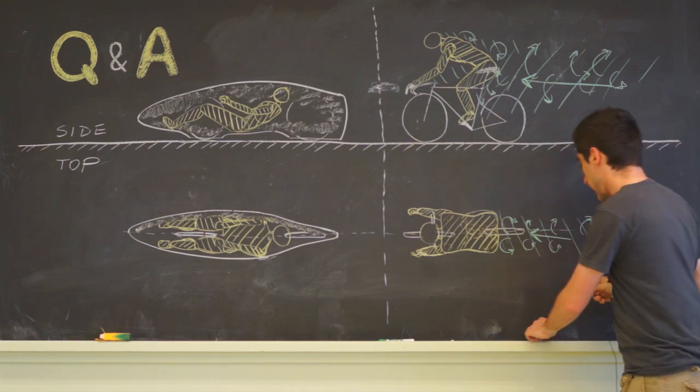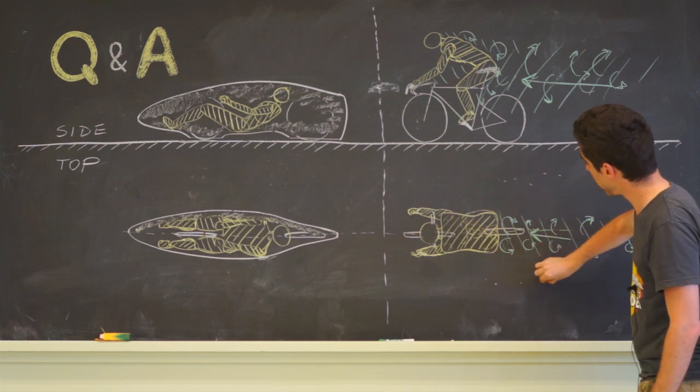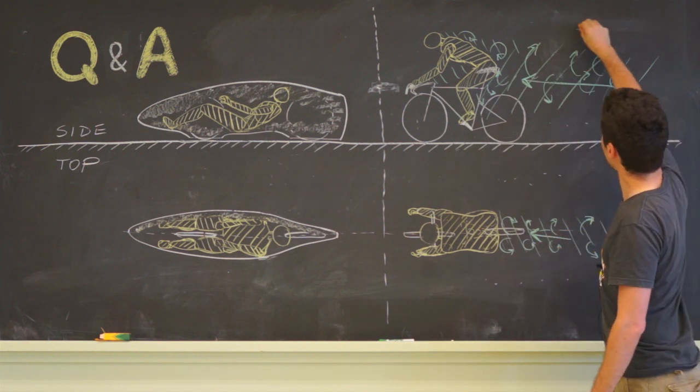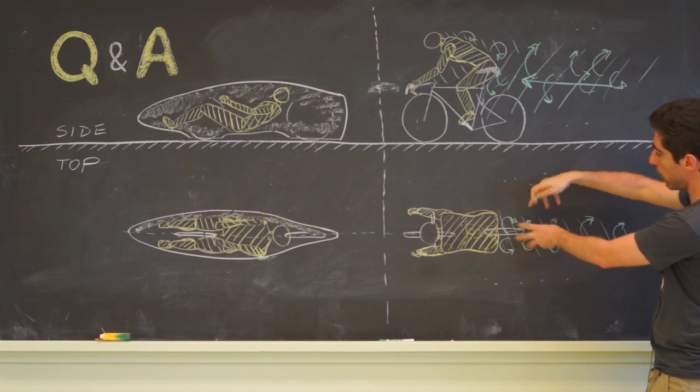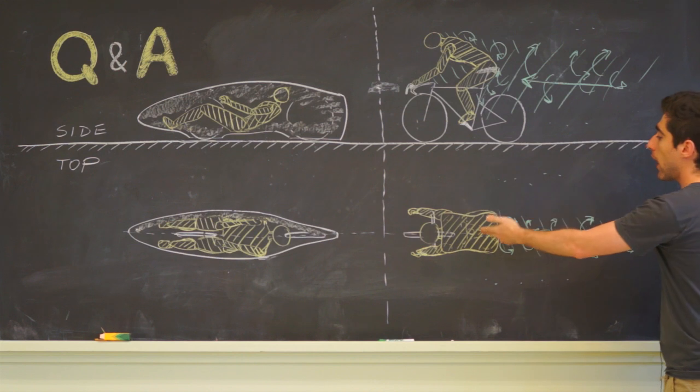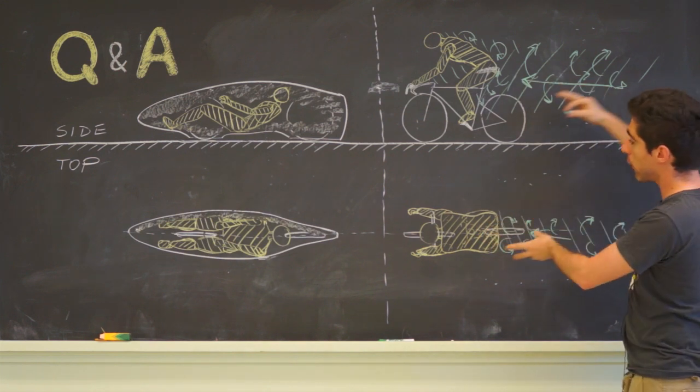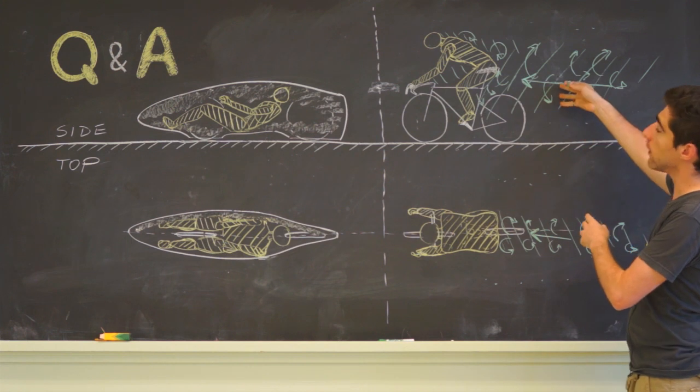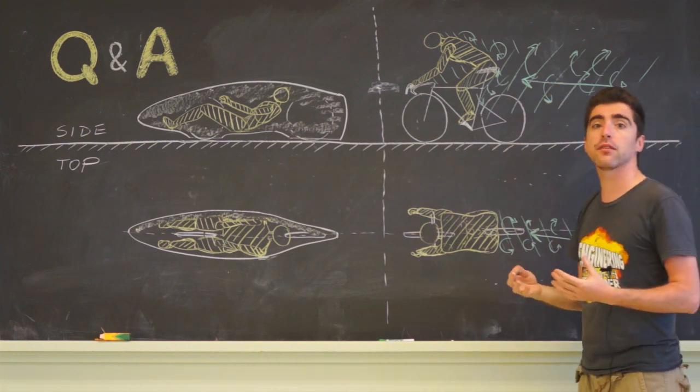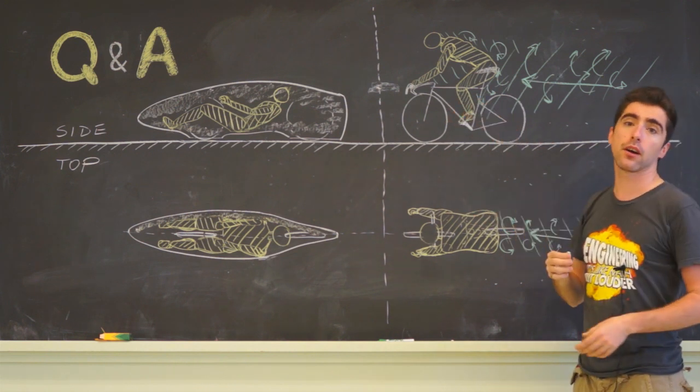Because air is sticky, all the air that's stationary around the rider applies a force to this column that moves with the rider, trying to pull it back. The rider has to supply energy to move this big column through. This is why for this bicycle, 90% of the energy goes into pulling a big column of air with you.